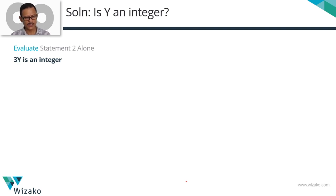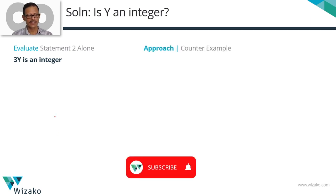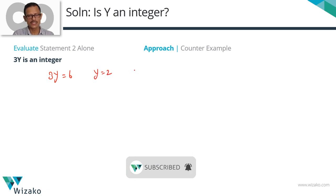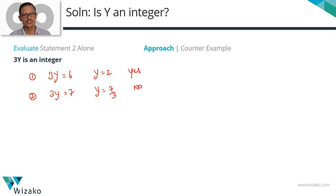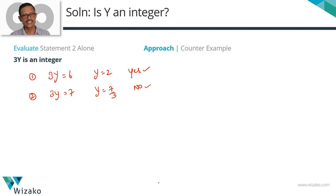Moving on to statement 2: 3y is an integer. Using the same counter-example approach, let 3y equal 6, so y equals 2 — is y an integer? Yes. Now let 3y equal 7, so y equals 7 over 3 — is y an integer? No. So 3y being an integer does not guarantee y is an integer. There are examples where it is and examples where it isn't, so from statement 2 we still don't have a conclusive answer.